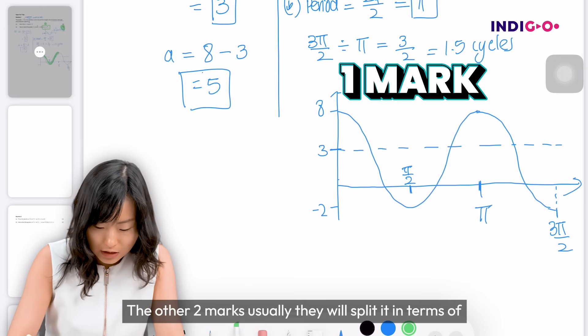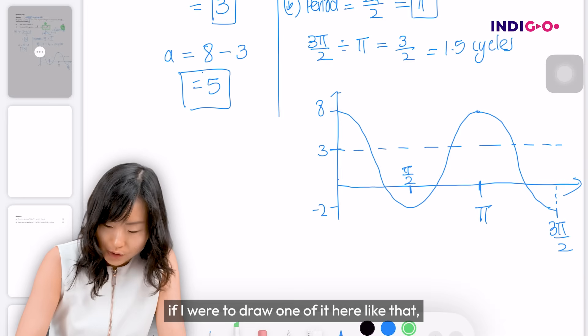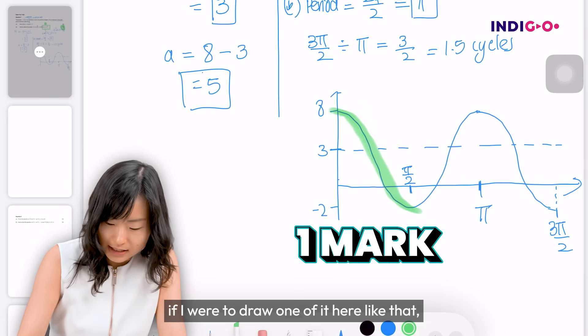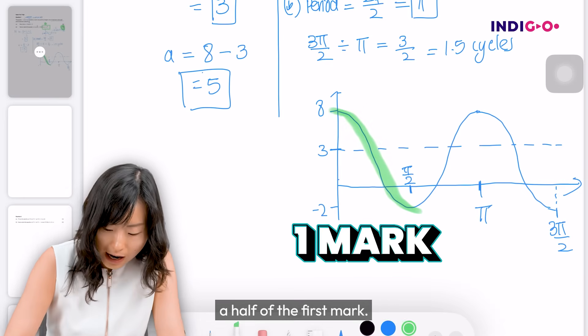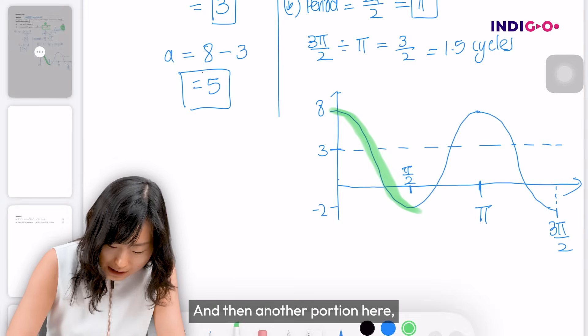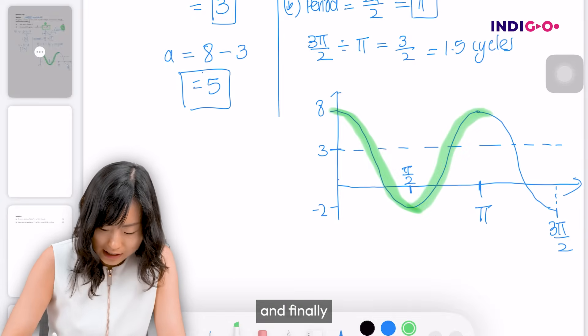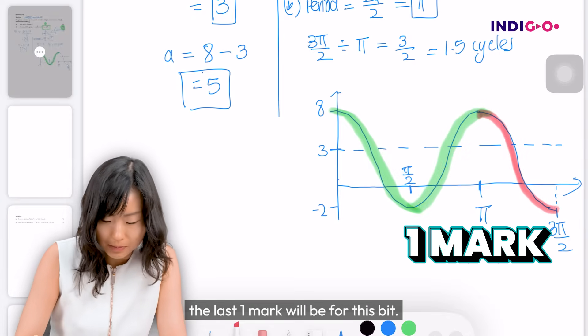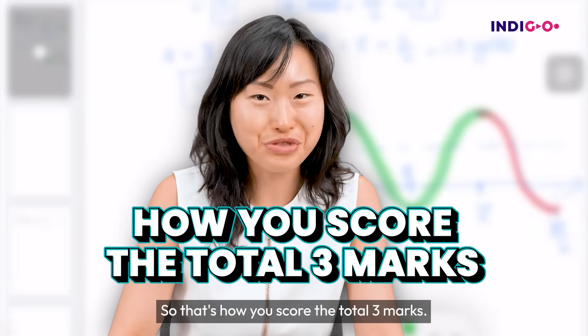The other 2 marks, usually they will split it in terms of - if I were to draw one of it here like that, this is going to be 1 mark, half of the first mark and then another portion here. And finally, the last 1 mark will be for this bit. So that's how you score the total 3 marks.